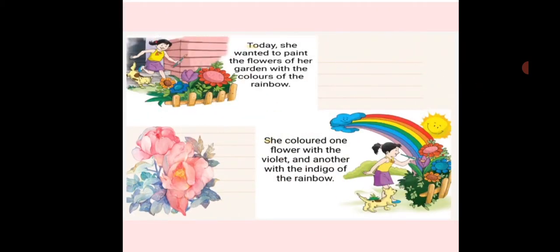Today she wanted to paint the flowers of her garden with the colors of the rainbow. She colored one flower with violet and another with the indigo of the rainbow.